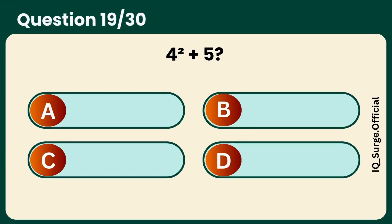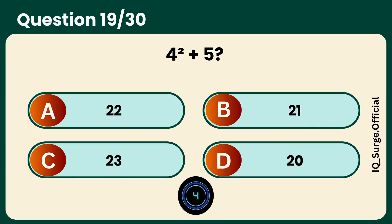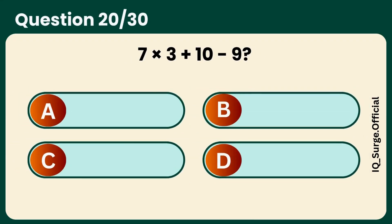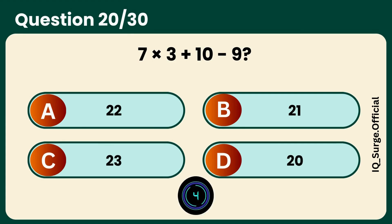What is 4 squared plus 5? 21. 7 times 3 plus 10 minus 9? 22.